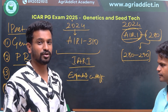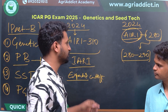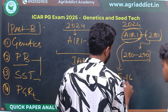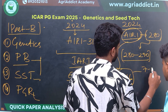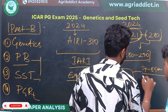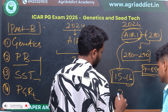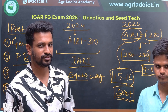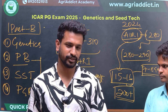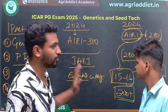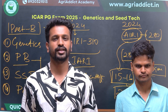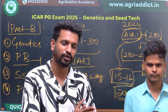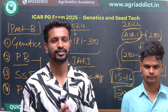To summarize the seat availability at IARI: approximately 15 to 16 seats for GPB and 6 to 7 seats for Seed Technology. Scoring more than 200 gives a good chance for GPB. This is the full analysis for the 2025 paper covering Genetics, Plant Breeding, and Seed Technology. If you have any questions, please comment on the video — thank you.